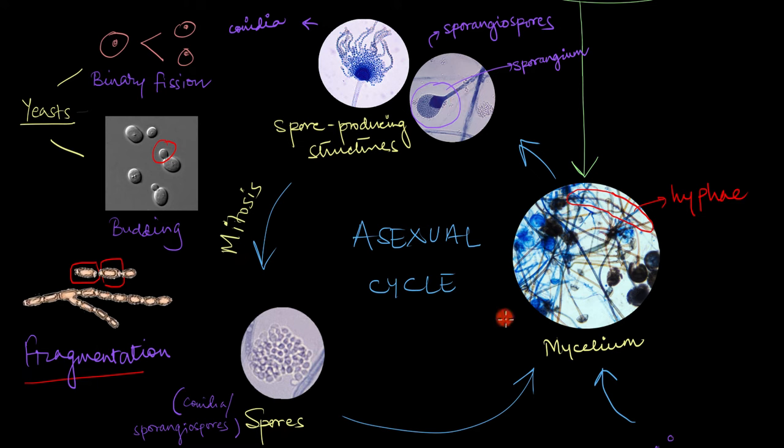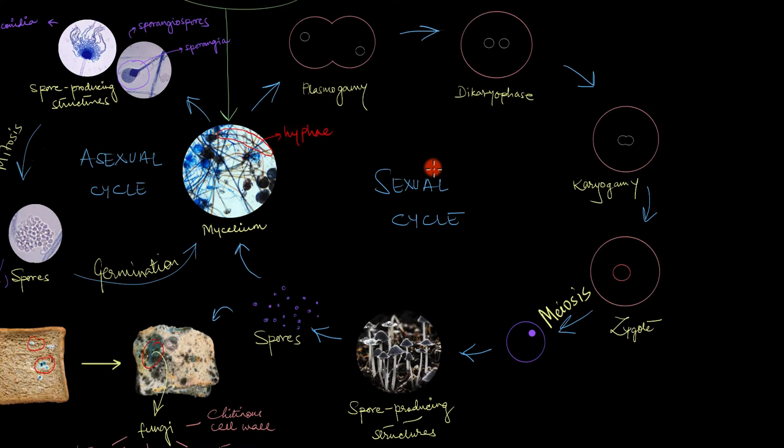Now that we have covered the whole asexual cycle and the different methods involved in asexual reproduction in fungi, let's move on to the sexual cycle now. Sexual reproduction in fungi takes place in three major steps: plasmogamy, karyogamy and meiosis. Other than meiosis, these other two terms sound a little fancy. So let's break them down.